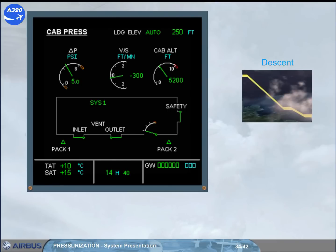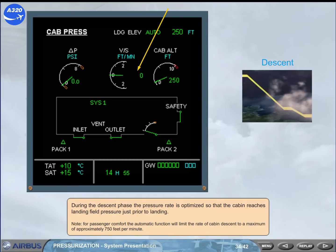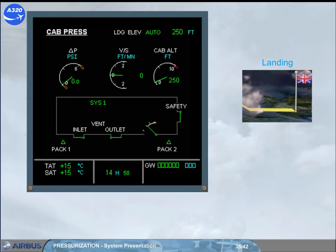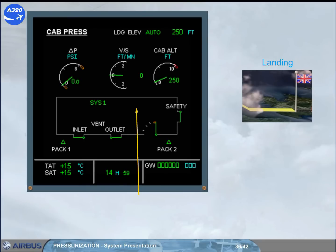During the descent phase, the pressure rate is optimized so that the cabin reaches landing field pressure just prior to landing. For passenger comfort, the automatic function will limit the rate of cabin descent to a maximum of approximately 750 feet per minute. At touchdown, the cabin altitude should be at the airfield elevation with no residual pressure. A few seconds after touchdown, the outflow valve fully opens by the active controller. A few seconds after the outflow valve is fully open, an automatic changeover of the system controllers occurs in preparation for the next flight, so that both systems are used equally.